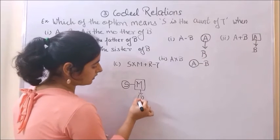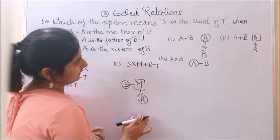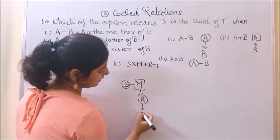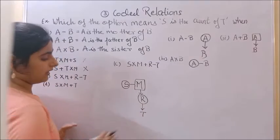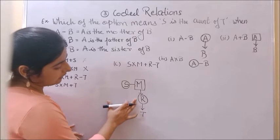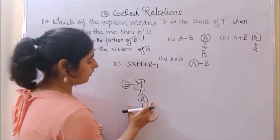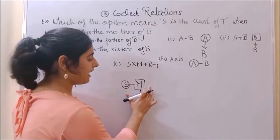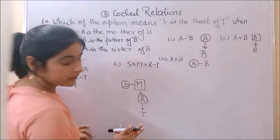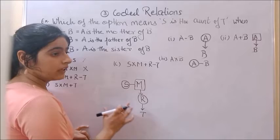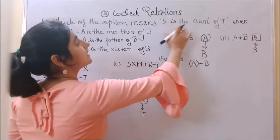R is female, mother of T in the lower generation. Now let's see: R is the mother of T, and R is the daughter of M. That's why M is T's grandparent, and S is also T's grandparent. Option C is wrong because we need S is the aunt of T.